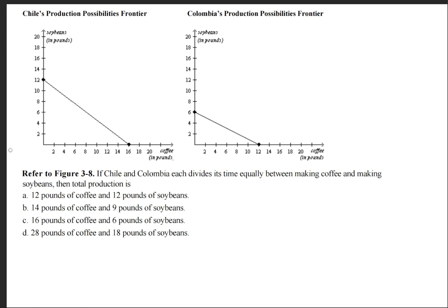Now in order to solve this question, we're going to take a look at both production possibilities frontier curves. And notice here that the keyword is divide its time equally. Equally is the keyword here. Because what this allows us to do is simply find the midpoint between these two values.